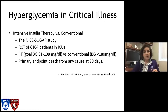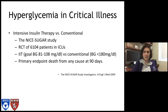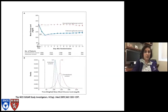Another condition in the ICU that hasn't been touched on yet in this course is hyperglycemia. We've heard quite a bit about hyperglycemia in the last 10 to 15 years in the critical care literature. The NICE-SUGAR study, a randomized controlled trial of over 6,000 ICU patients, looked at whether intensive insulin therapy with a goal blood glucose of 81 to 108 was better than conventional therapy keeping blood glucose less than 180. The primary endpoint was death from any cause at 90 days. The graphs show conventional glucose control in orange and intensive insulin therapy in blue, with the conventional group having a higher average daily glucose.